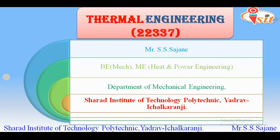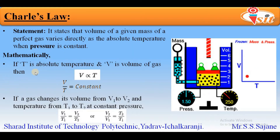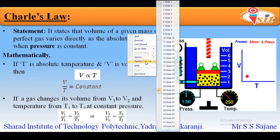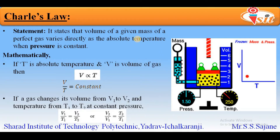In the second lecture we studied Charles' Law and Gay-Lussac's Law along with several examples. Today we will see the last part of the gas laws, that is Avogadro's Law. Before starting, let's take a fast review of the previous lecture. Charles' Law states that the volume of a given mass of perfect gas varies directly as the absolute temperature when pressure is kept constant. Mathematically, V is directly proportional to T at constant pressure.